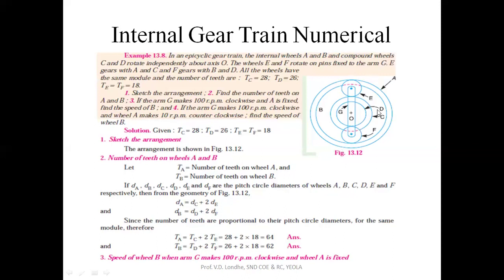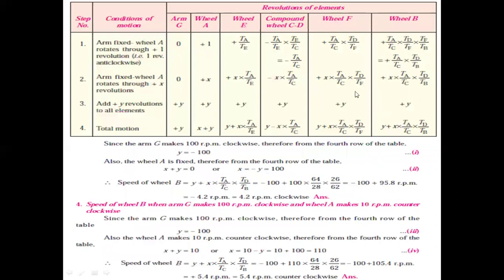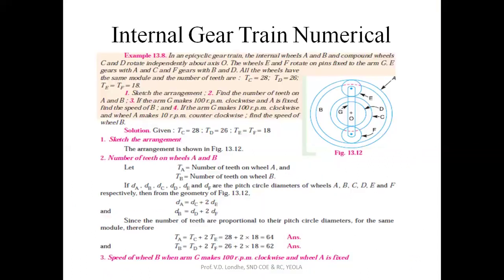The outer wheel is fixed. We are going to use the tabular or step motion method. In the table, the arm is fixed and wheel A is given plus one rotation. After wheel A is given plus one rotation, wheel E is in contact with A. To find the speed of E: if A has plus one rotation, E will also have plus one rotation, so NE/NA equals TA/TE.